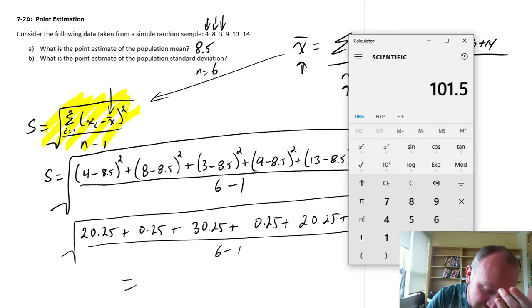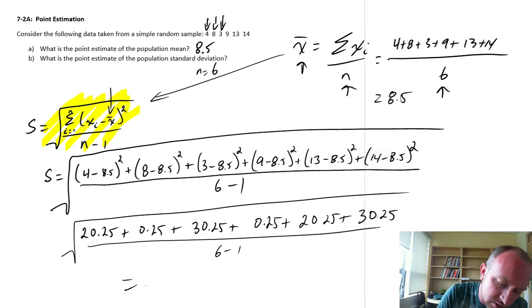So that's 101.5 divided by 6 minus 1, so divided by 5. So that's 35 and a quarter. And I still haven't taken the square root yet.